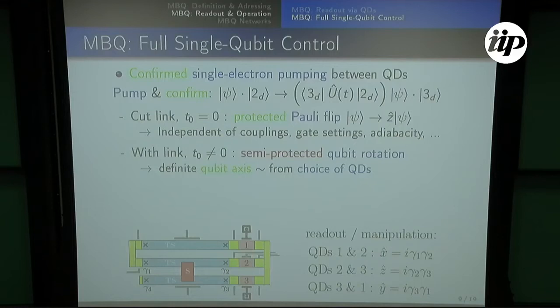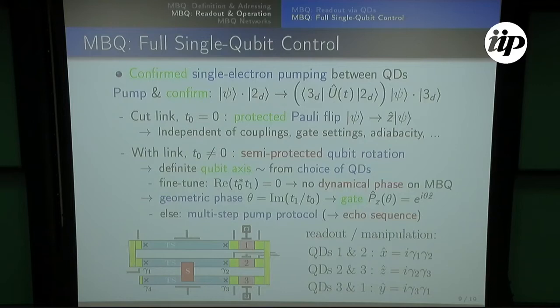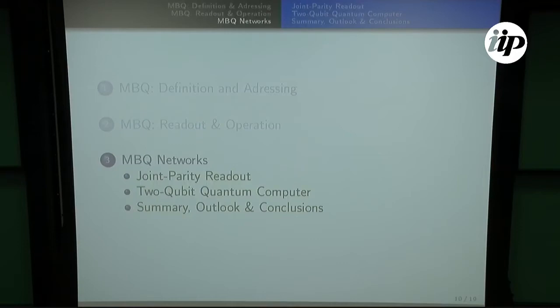If you cut the interference link — for example by a gate — then you know really what you've done, namely a protected Pauli flip: going from here to here with only this path means you definitely did gamma_2 gamma_3, which is just the Z operator. With this link you can also do semi-protected qubit rotations. Semi-protected means you definitely know which qubit axis you pick, so if you pick dots two and three, you rotate about the Z axis. However, it requires some fine-tuning: if the detuning is zero, you don't get any dynamic phase, and you can get a geometric contribution, giving a geometric phase gate.